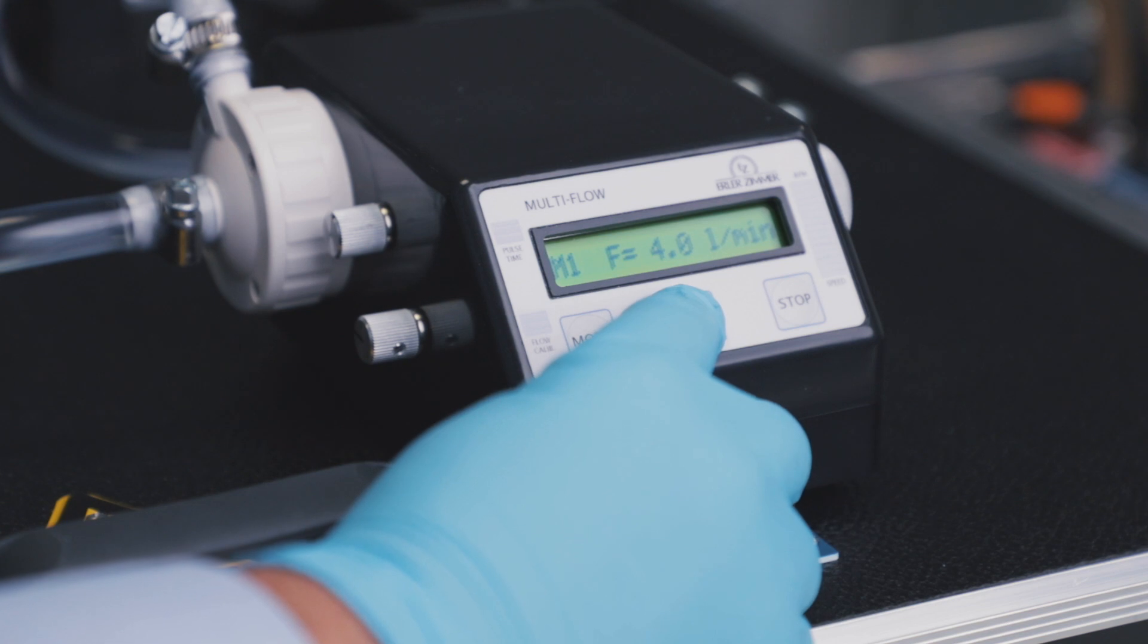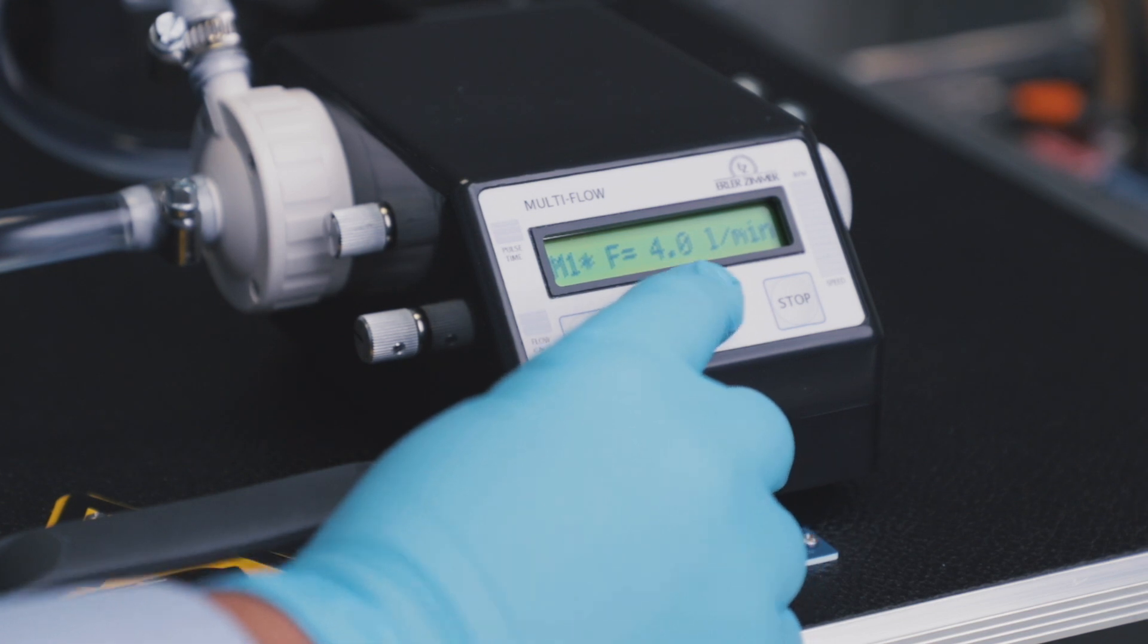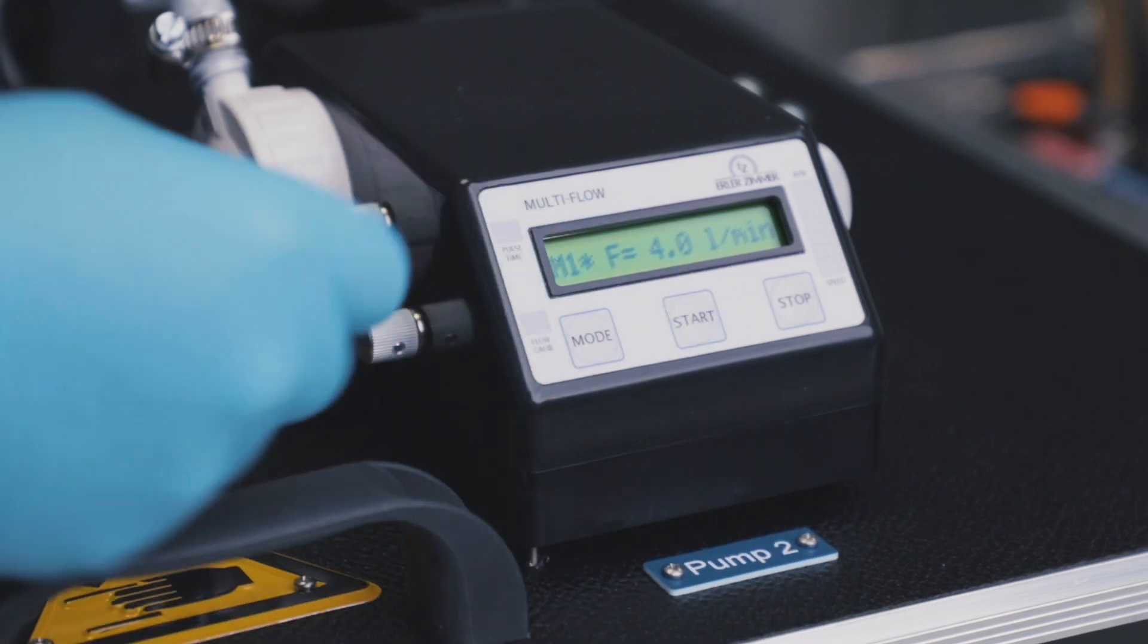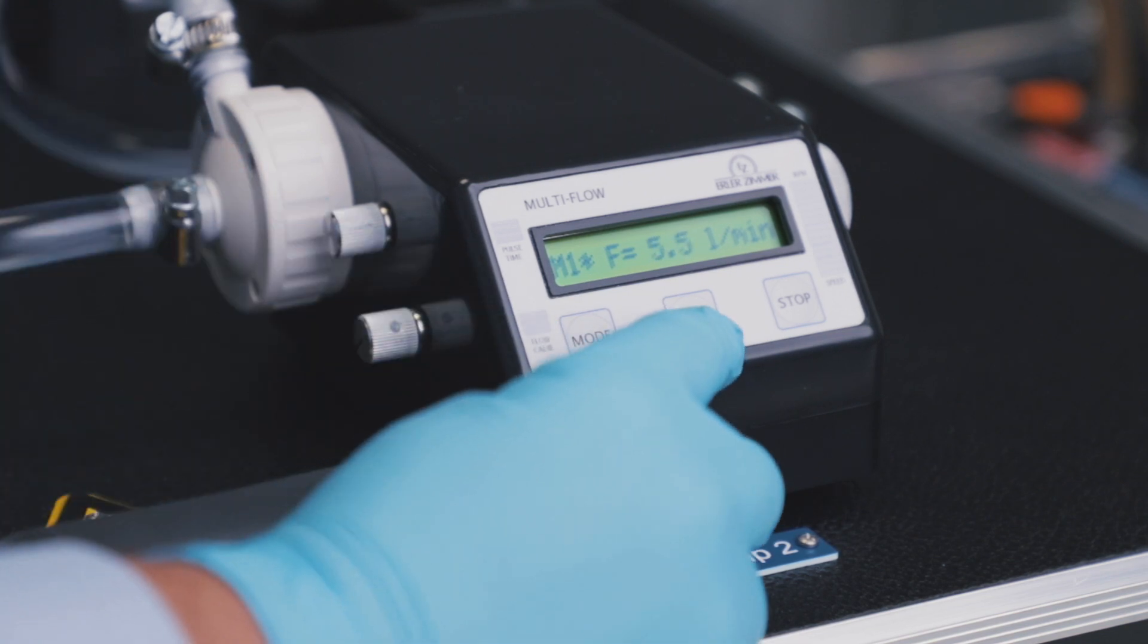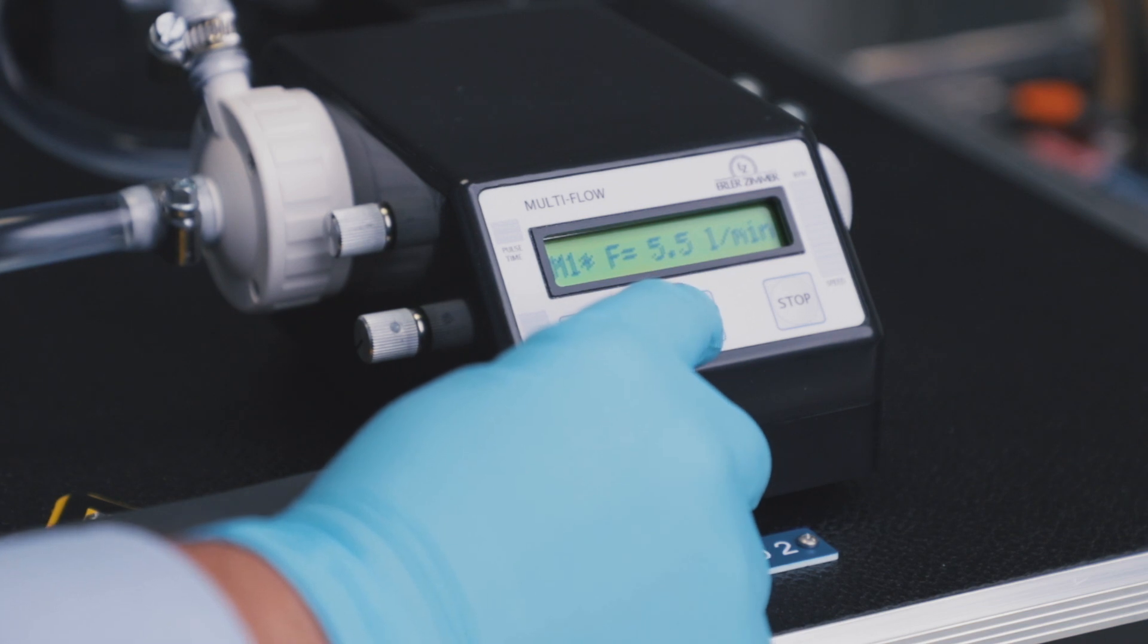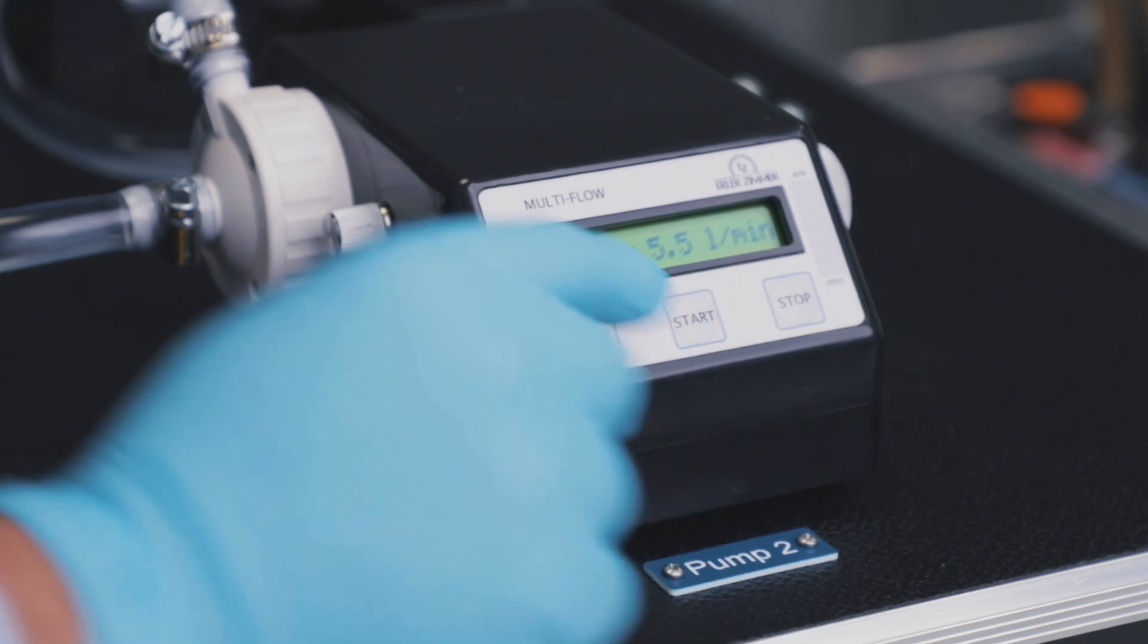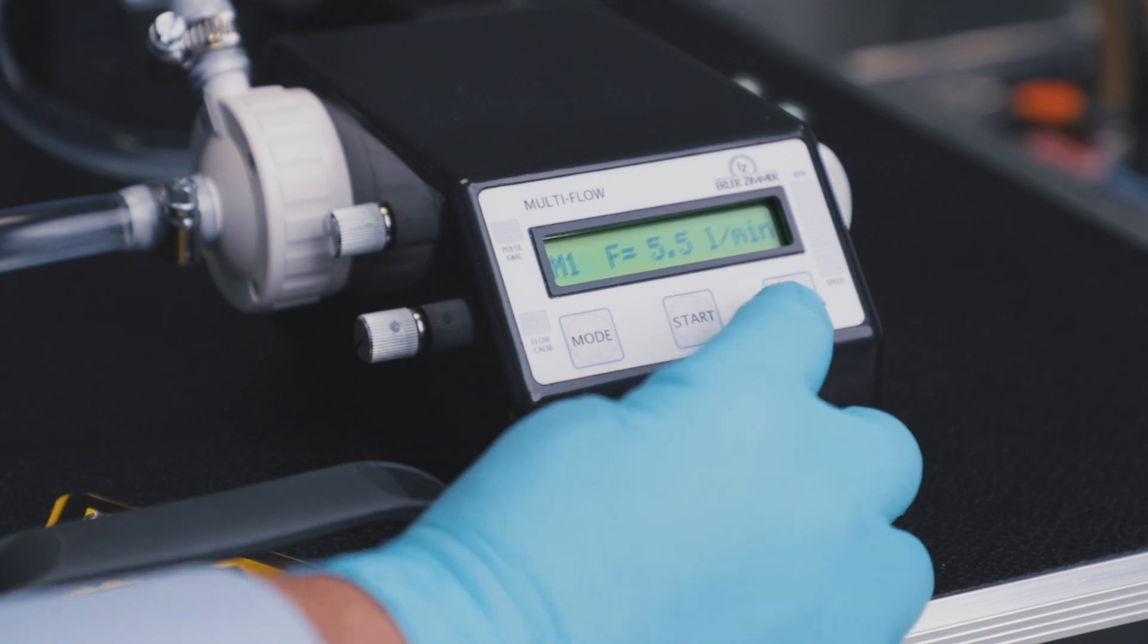If you press the start button for more than three seconds during operation, a small asterisk sign will appear. This means the pump volume display can be adjusted now by turning the lower small knob on the left. Adjust the volume to the value you see in your ECMO machine or any other flow meter.